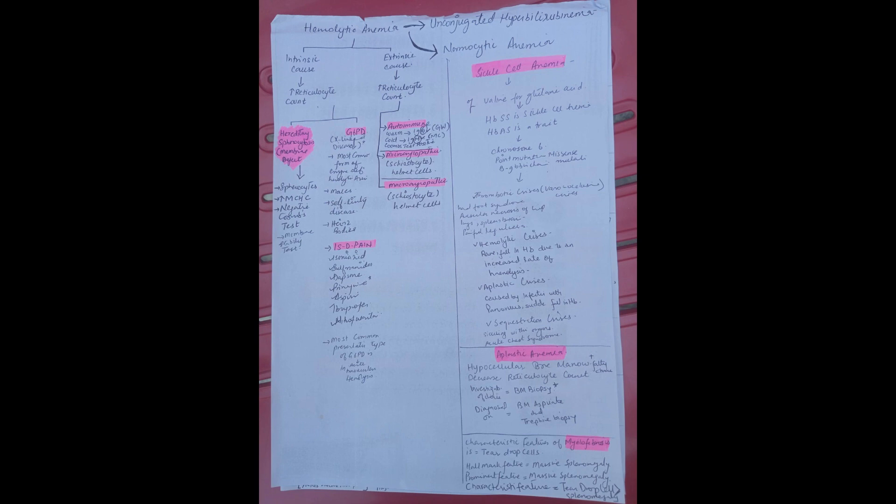Thrombotic crisis. There is vaso-occlusive crisis that causes hand-foot syndrome, avascular necrosis of the hip, lung, spleen, brain, painful leg ulcers. Then there is hemolytic crisis that is rare drop in hemoglobin due to increased rate of hemolysis.